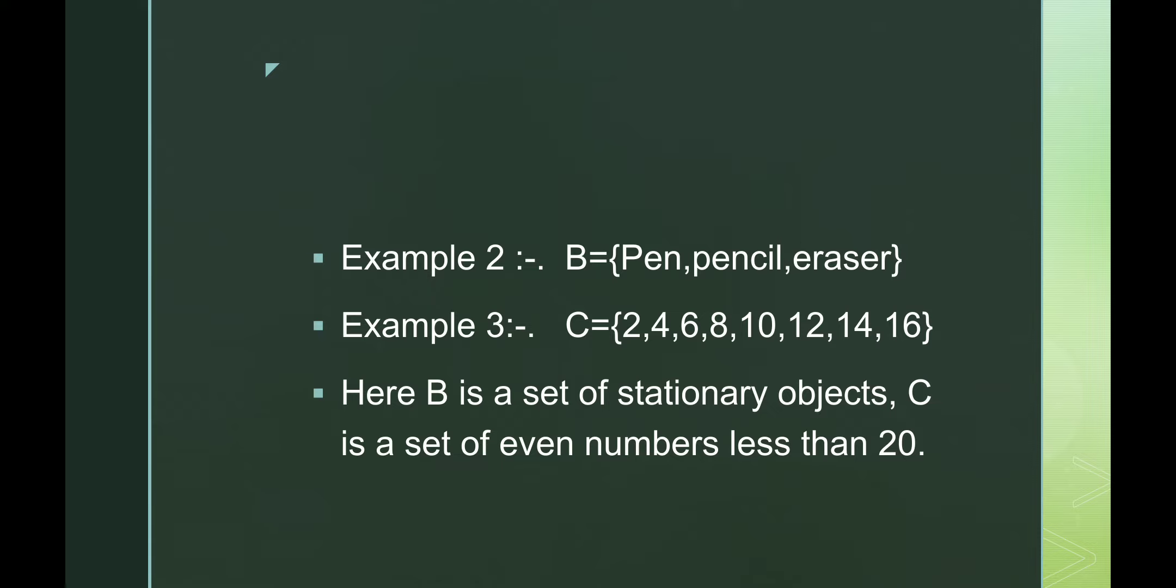Example 2: B is a set containing pen, pencil, eraser. Example 3: C is another set containing the elements 2, 4, 6, 8, 10, 12, 14, 16. Here, B is a set of stationary objects. That means pencil, pen, eraser.